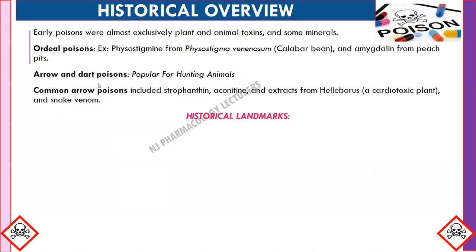Next is arrow and spear poison, which was very popular for hunting animals. Examples of arrow poisons include strophanthin, equinathin, extract from helleborus (a cardiotoxic plant), and snake venom.